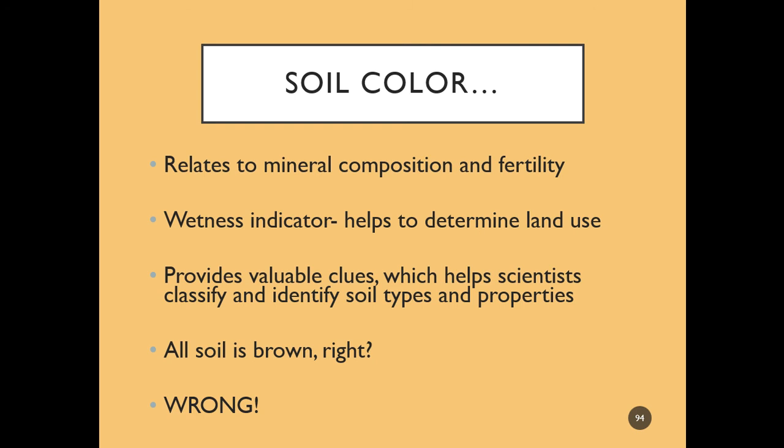So soil color relates to the mineral composition and fertility of the soil. It's also an indicator of wetness and is used to determine land use. It provides many valuable clues about the history of the site. If you're there on one day, looking at the soil color can give you an idea of what the soil moisture looks like over the course of a year or several years — it's sort of a snapshot into the history of the soil.